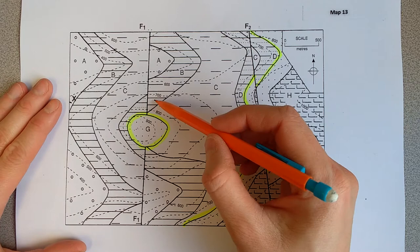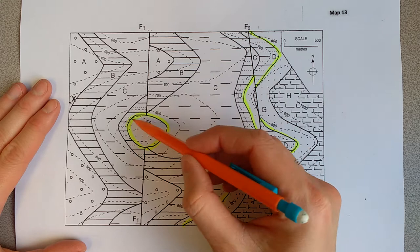You can see that fault 1 is not causing displacement of my unconformity, so that must mean that it's older than the unconformity.